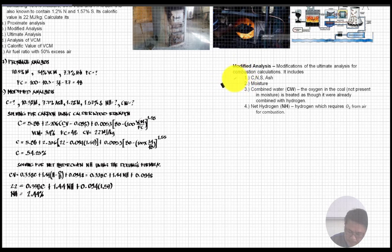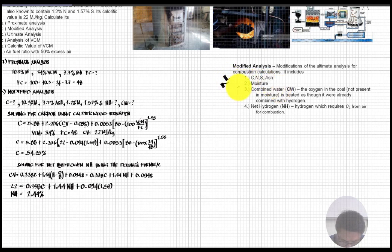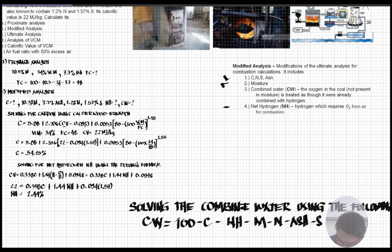Let's have your checklist here. We have carbon — that's already checked. We have moisture, combined water — the only thing we still need is net hydrogen. We've now obtained net hydrogen; only combined water is still missing.